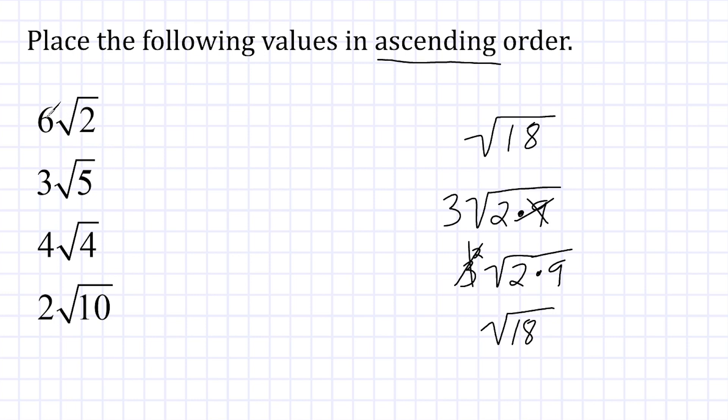So we're going to start by taking this 6 here and squaring it, and that would give us 36. So what we're going to do is take this 2, which is under the radical, and multiply that by 36, which would give us the square root of 72. So basically what we are saying is that the square root of 72 is equal to 6 times the square root of 2 in simplest radical form. Now we're going to take this 3 outside of the radical and square it, and that would give us 5 times 9, because 3 to the second power is 9, and that is equal to the square root of 45.